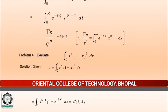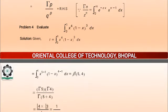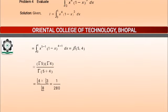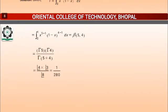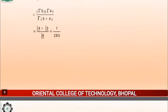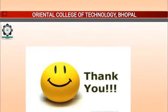Next question: Evaluate the integral from 0 to 1 of x⁴(1-x)³ dx. It is a simple question. Here 4 can be replaced by 5-1 and 3 can be replaced by 4-1. So according to the definition of the Beta function, this can be written as Beta(5,4). By the formula relating Beta and Gamma functions, this equals Gamma(5) times Gamma(4) upon Gamma(9). Gamma(5) equals 4 factorial, Gamma(4) equals 3 factorial, and Gamma(9) equals 8 factorial. This gives 1 upon 280. Thank you students for listening to this lecture.